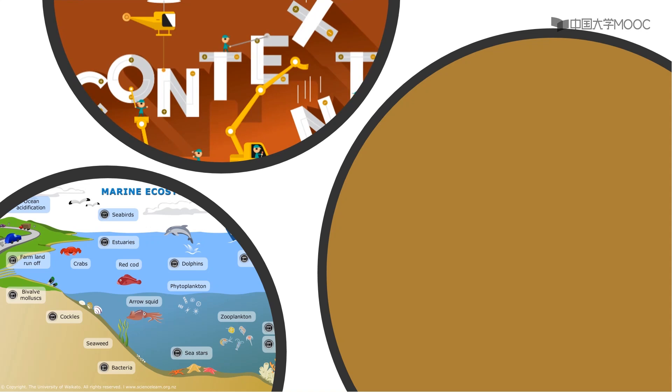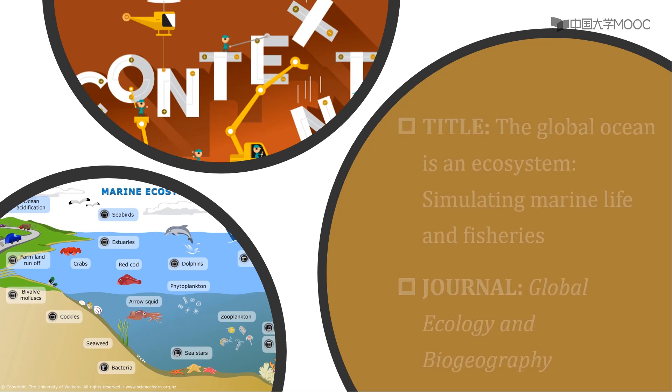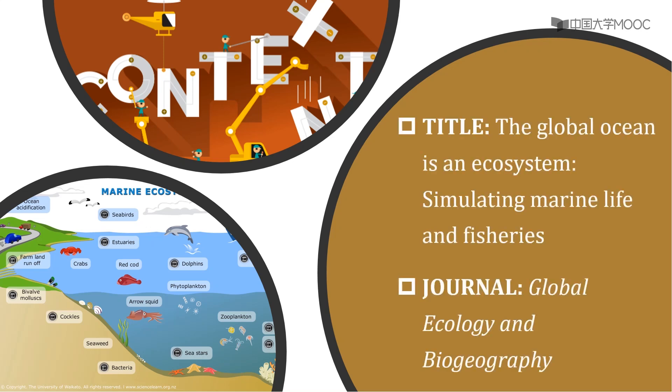Then, what context does Text 3 take? If we check out the title and the journal where it is published, we could infer that this paper is intended for experts in the field of ecology and biogeography, who are expecting to see how marine life and fisheries are simulated. Bearing this in mind, we'll now turn to Text 3, the introduction section of the paper.